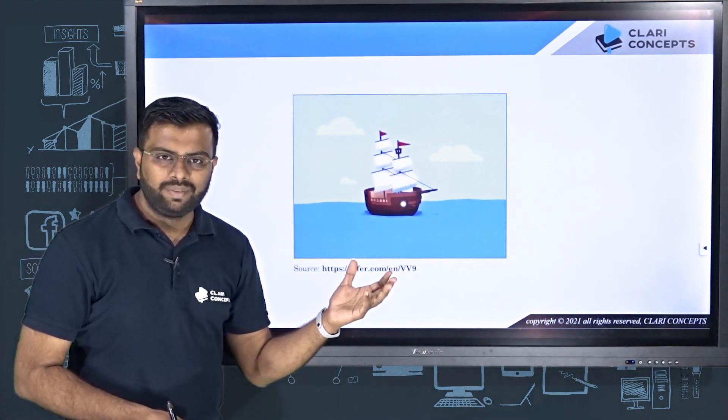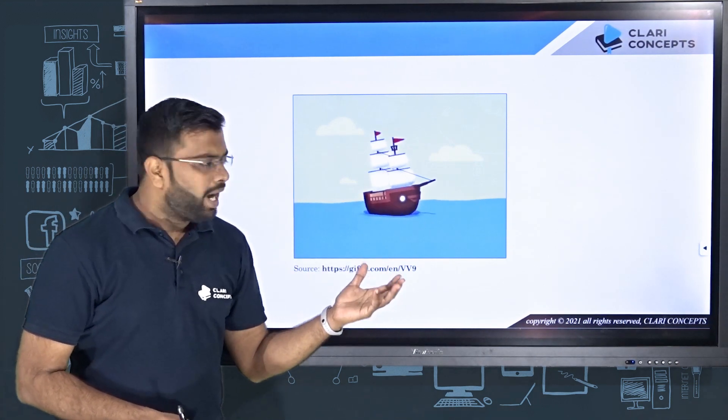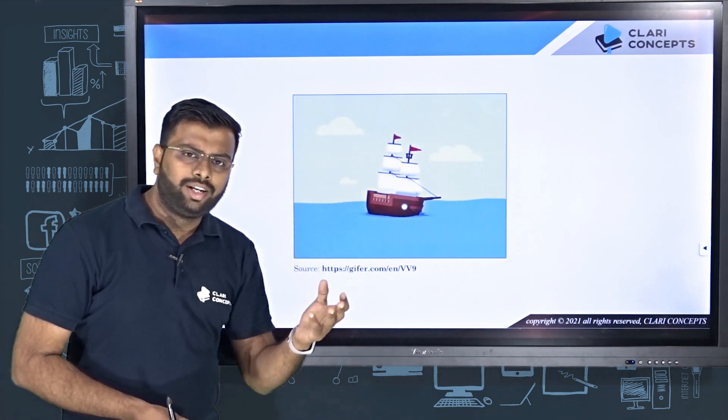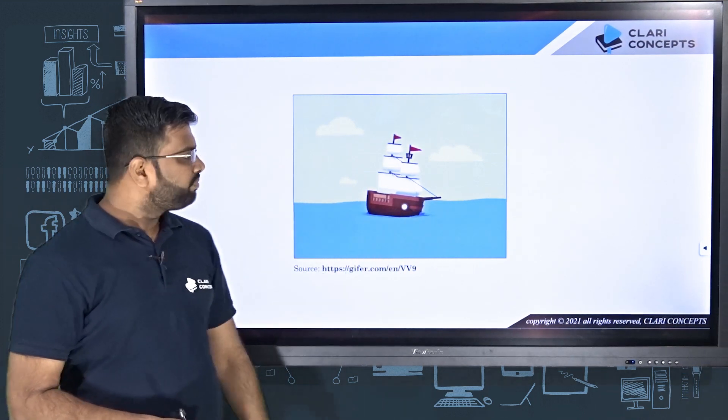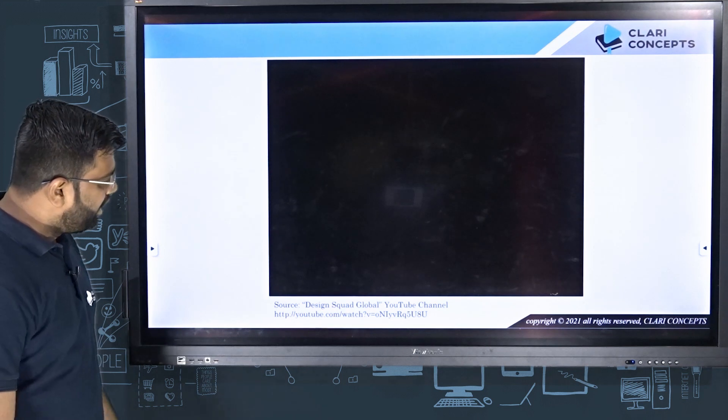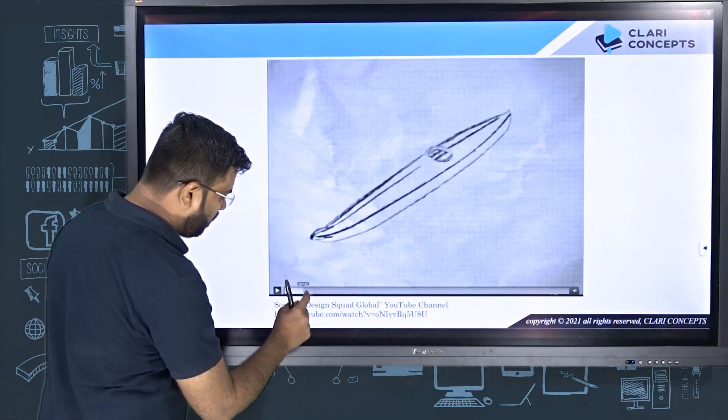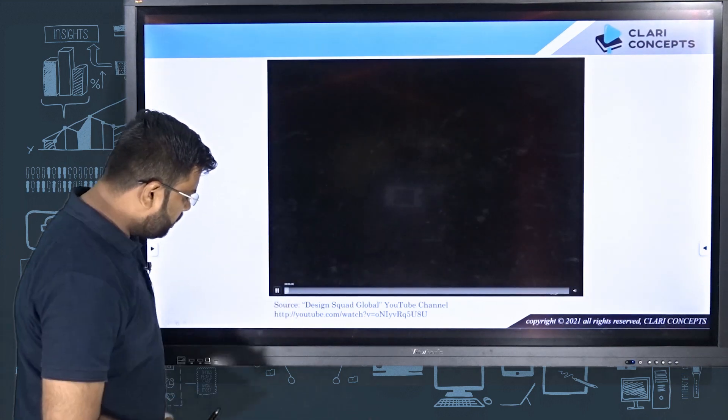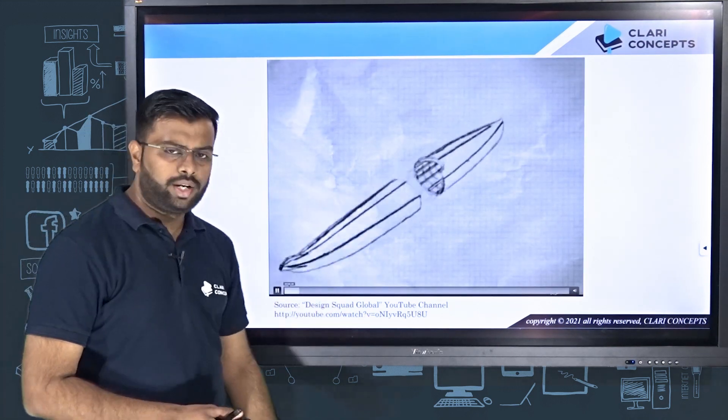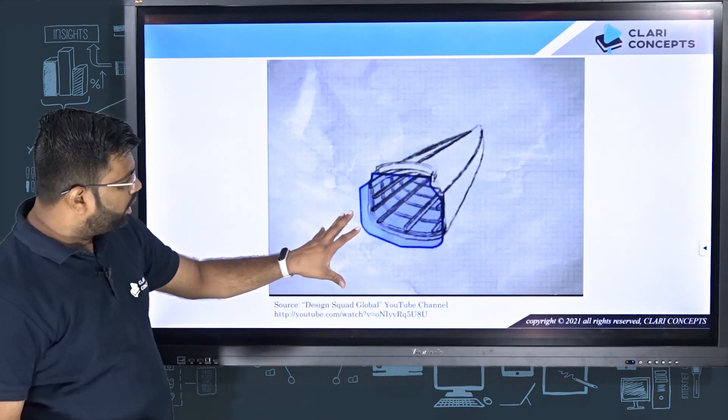Today we'll talk about the stability characteristics of floating bodies. Let's look at an interesting video from Design Squad Global YouTube channel. They are showing you the cross section of a ship or kayak.